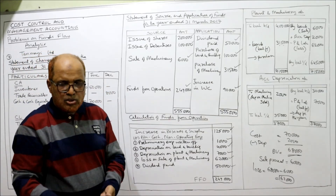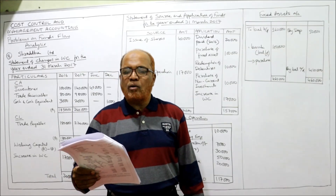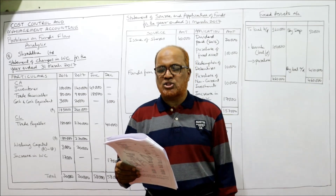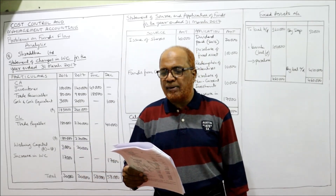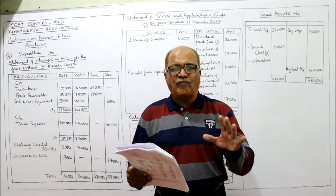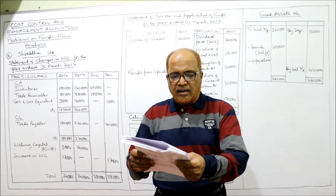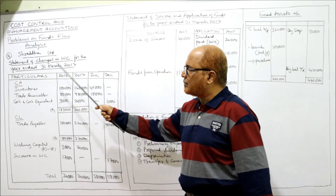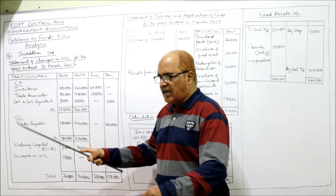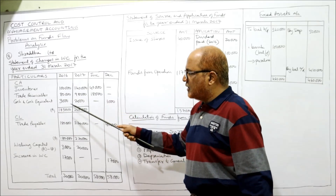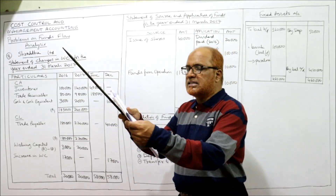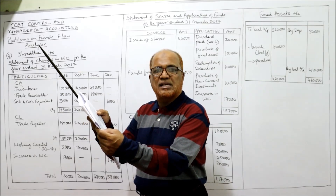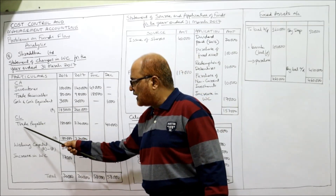Now starting problem number eight: from the following summarized financial statements of Shraddha Limited as at 31st March 2016 and 2017, prepare a statement showing source and application of funds and a statement of changes in working capital. First, we make the statement of changes in working capital. Current assets are inventories, trade receivable, and cash and cash equivalent. All three values are given for last year and current year.